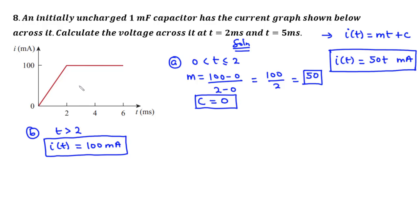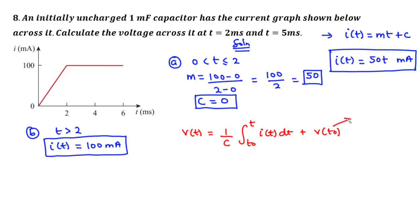Based on these two functions, we are going to find the voltage across the capacitor at t equals two milliseconds and at t equals five milliseconds. We will use the current-voltage relationship: v(t) = (1/C) times the integral from t-naught to t of i(t) dt, plus v(t-naught), where v(t-naught) is the initial voltage of the capacitor.